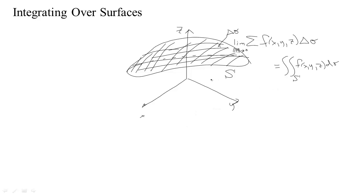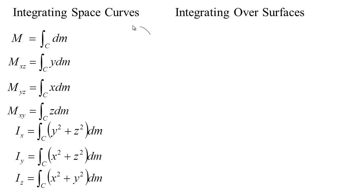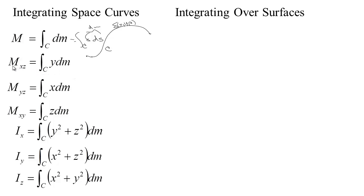The reason we want to do this integral is similar to why we wanted to integrate on a space curve. If we had some space curve with some density along it that depended on position in space, and we added up over that curve density dS — mass per unit length times the length — that would be a little chunk of mass dM. Summing those chunks up all along the curve gives the total mass. We could also find the moment about the xz plane, which is just the integral over c of y times density dS.